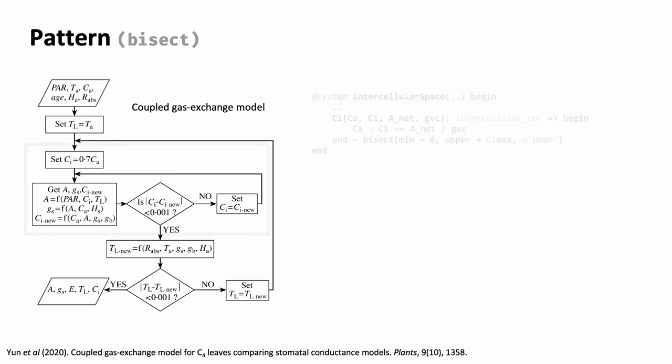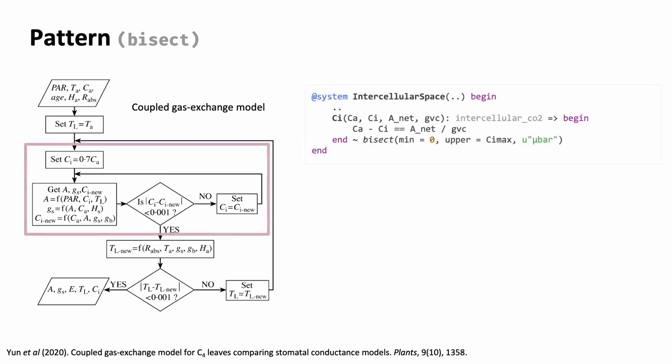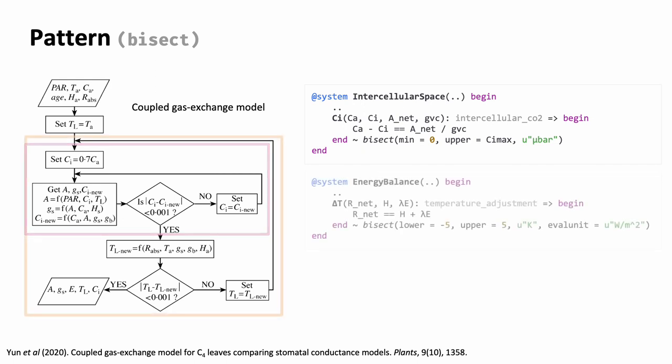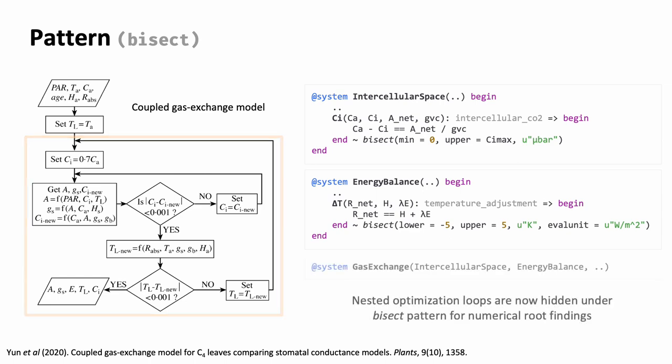While many existing models have to explicitly write down an optimization loop in the model code, here we can instead use bisect variable to let the framework deal with technical details. It also automatically takes care of nested loops in the case of making another layer of coupling to solve an energy balance equation to adjust the leaf temperature.